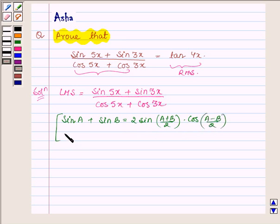And the formula of cos a plus cos b is equal to 2 cos of a plus b upon 2 into cos of a minus b upon 2.